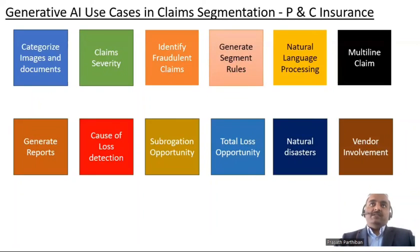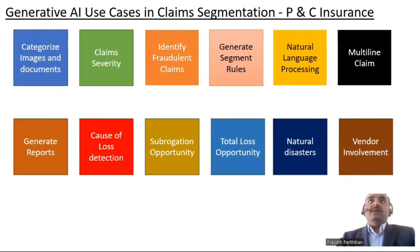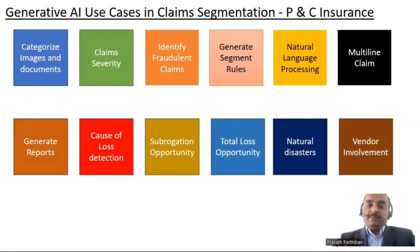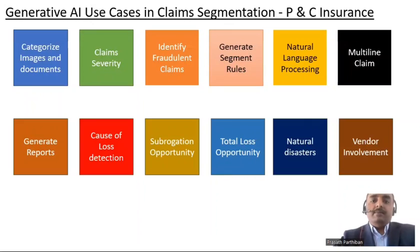Vendor involvement — it's very important for an insurance company to determine whether a claim will involve multiple vendors. For example, in Workers' Comp a doctor may be involved, or in personal auto a workshop. You categorize or segment those claims separately so they can be assigned to the correct adjuster.